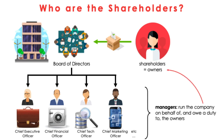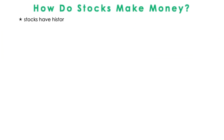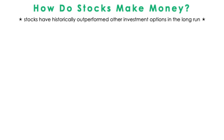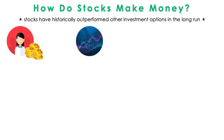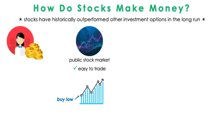However, these C-level managers do often hold many shares in the company they manage so that they are more motivated to do what's best for the company and its shareholders — so they have skin in the game, if you will. Stocks are a popular investment option that have historically outperformed other investment options in the long run. Stocks can earn the stockholder money in one of two ways. Firstly, stocks are attractive for how easy they are to trade, so many investors will buy shares when the prices are low and turn around to sell them again when the prices are high, pocketing this difference in prices. This increase in share value is called a capital gain.